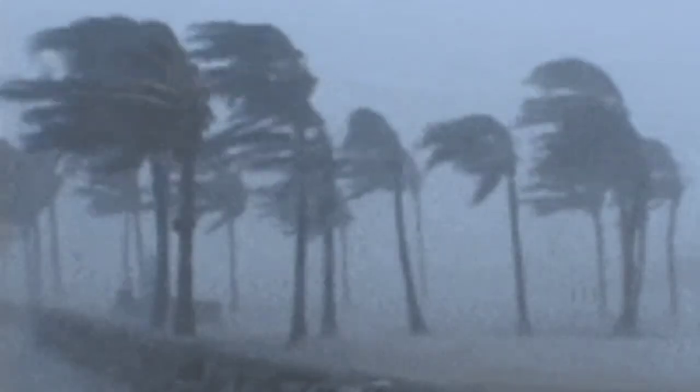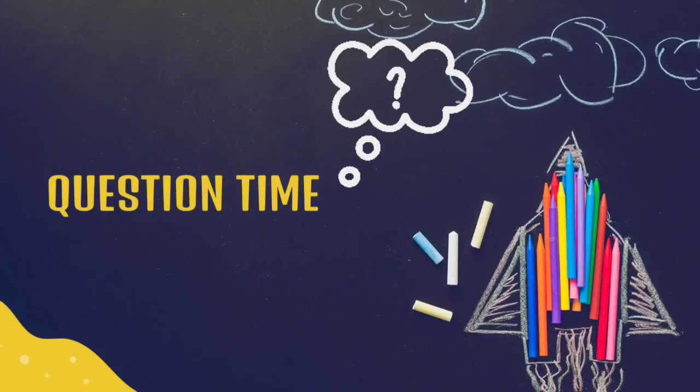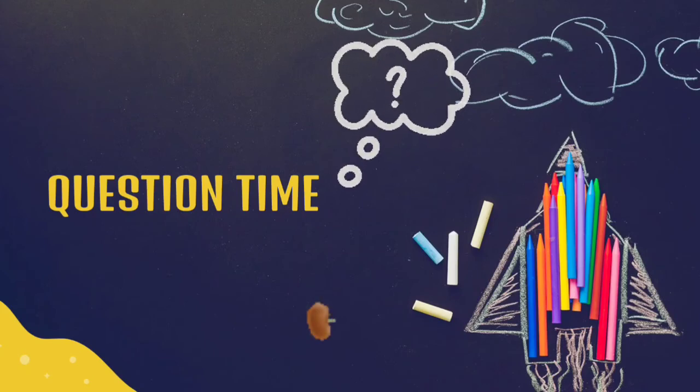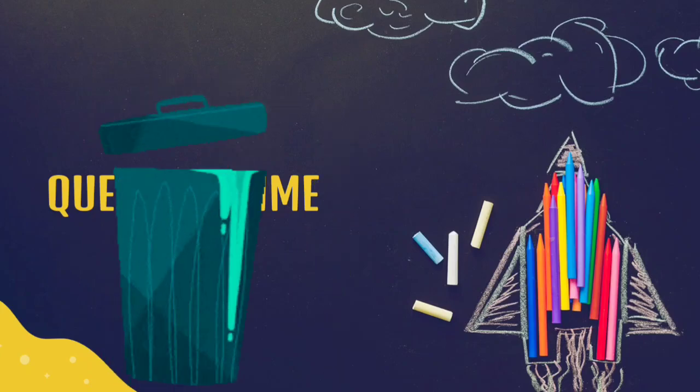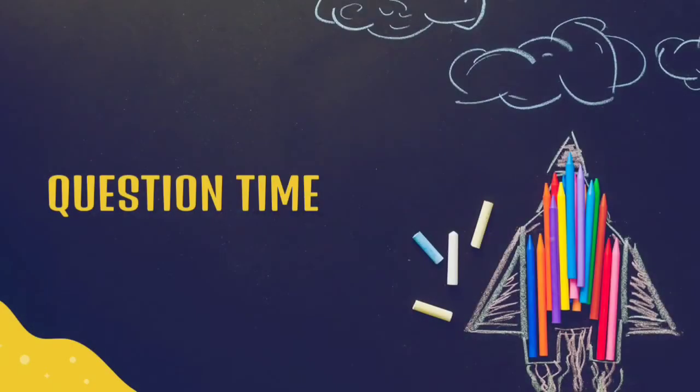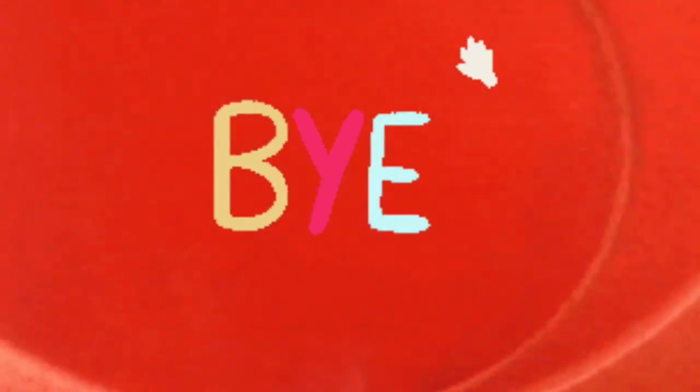Now how can we control erosion? Lovely. By planting trees with wide roots, by disposing our waste in the right way, by constructing drainage systems. And that brings us to the end of our class. See you in the next class.